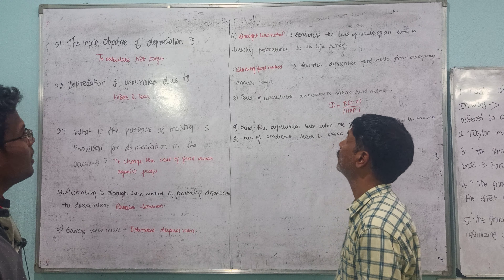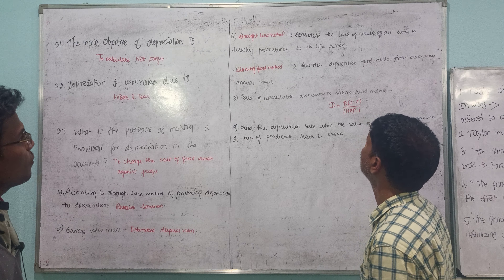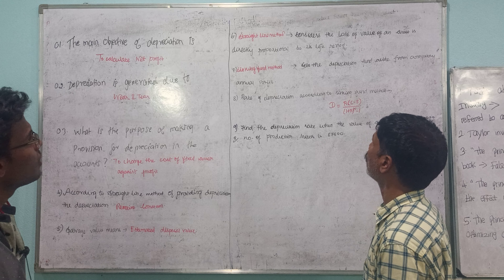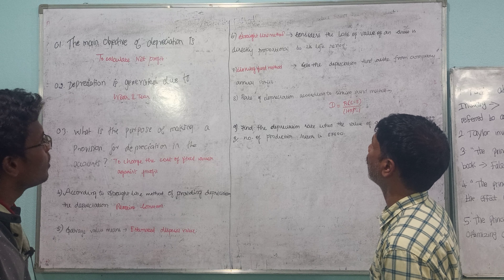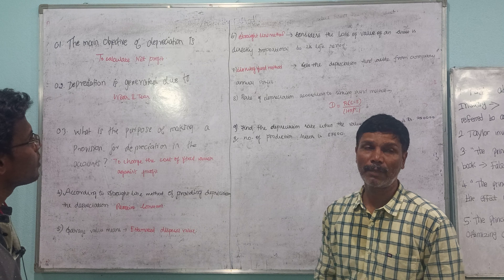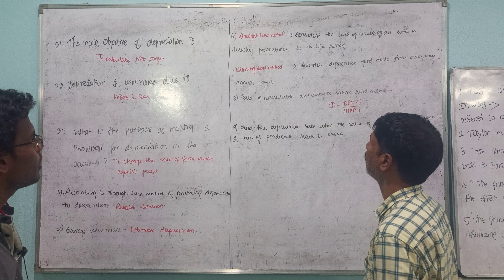Straight line method considers that loss of value of an asset is directly proportional to the life period. Loss of value is directly proportional to the life period — that is the straight line method.